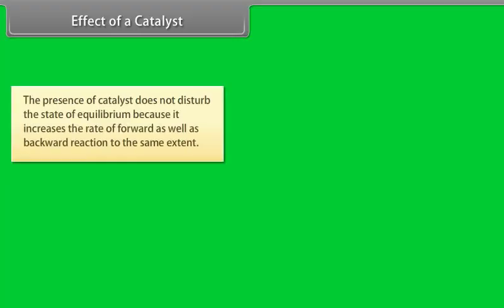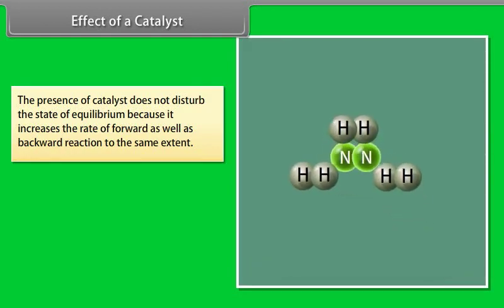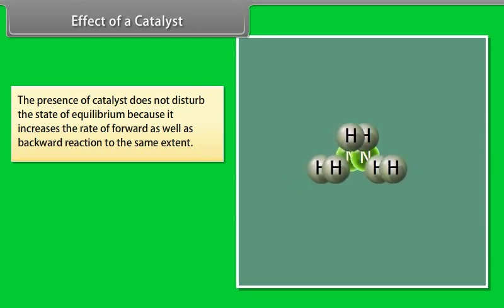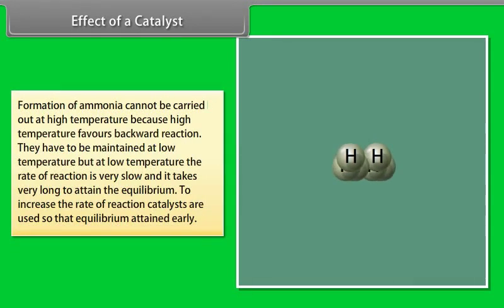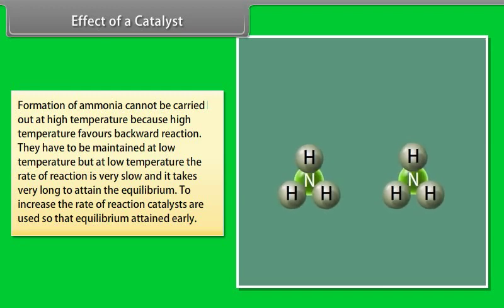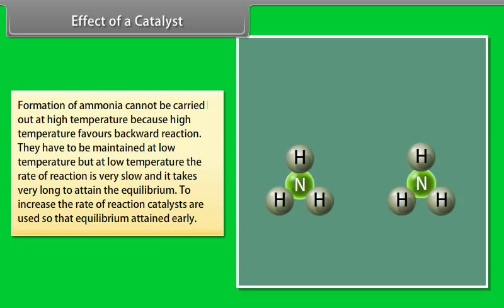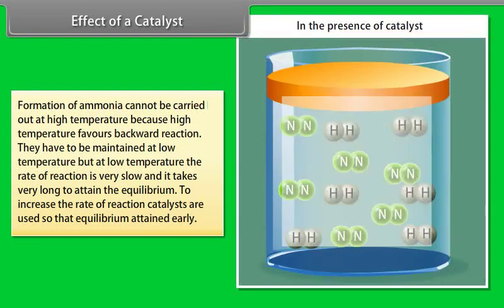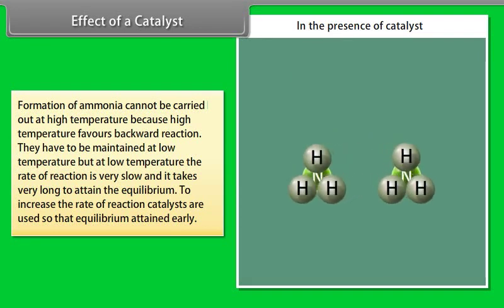Effect of a catalyst: The presence of a catalyst does not disturb the state of equilibrium because it increases the rate of both the forward and backward reaction to the same extent. The formation of ammonia cannot be carried out at high temperature because high temperature favors the backward reaction. At low temperature the rate of reaction is very slow and it takes very long to attain equilibrium. To increase the rate of reaction, catalysts are used so that equilibrium is attained early.